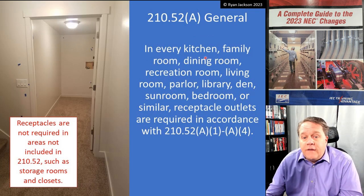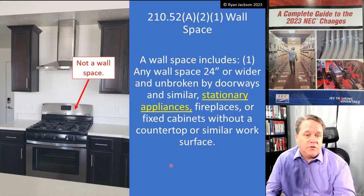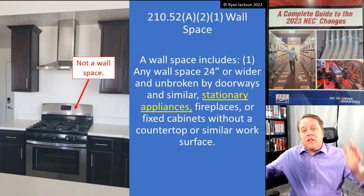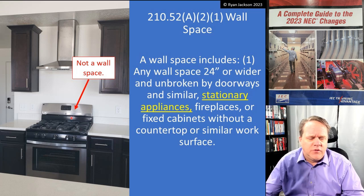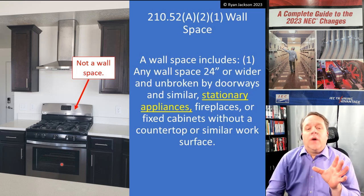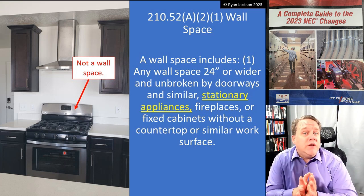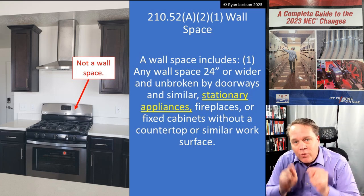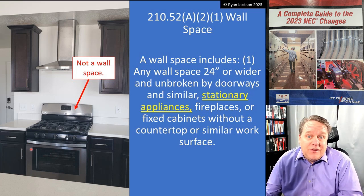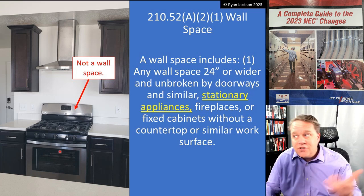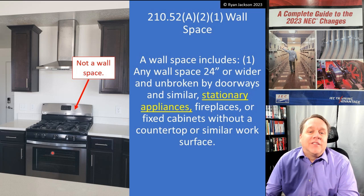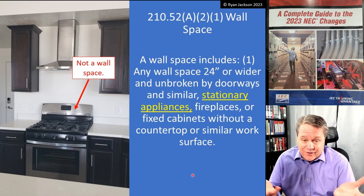210.52A requires regular wall-space receptacles in every kitchen. If you remove the range, that gap between two countertops is wall space — you'd need a receptacle there to satisfy 210.52A. In previous code versions, you could argue the space behind a range was still wall space. Now it's very clear: space consumed by stationary appliances is not considered wall space. That's probably a good clarification.